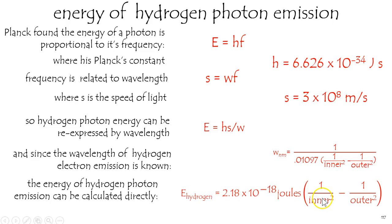times one over that inner shell that it went to, squared, minus one over that outer shell that it started from, squared. So this is a handy formula.